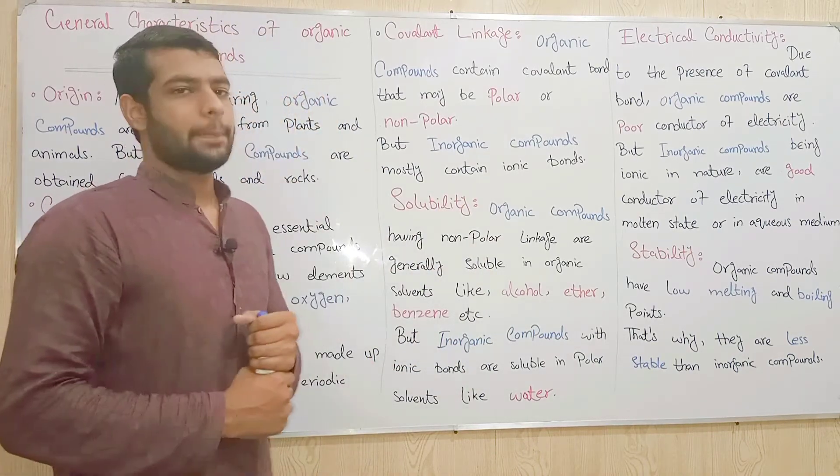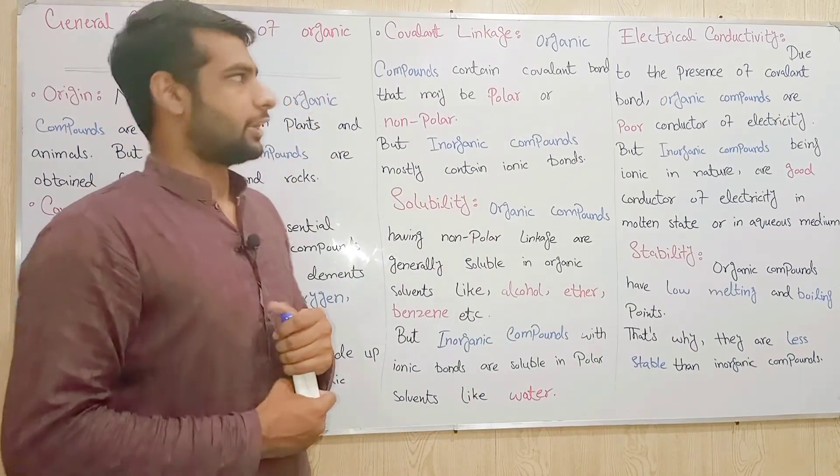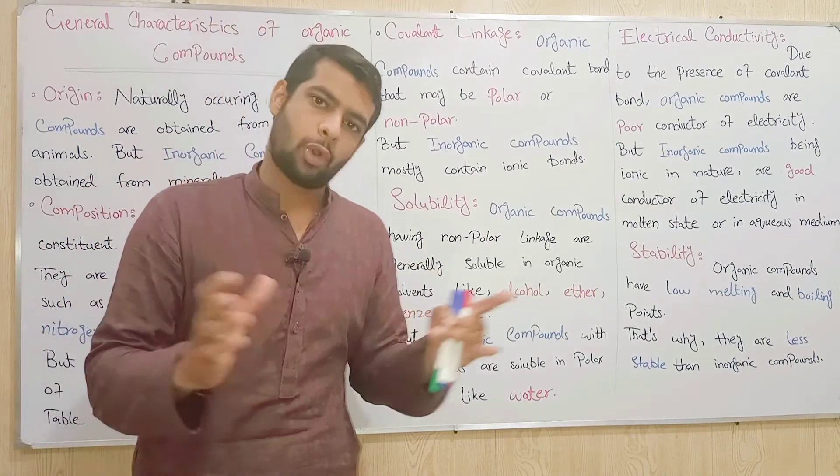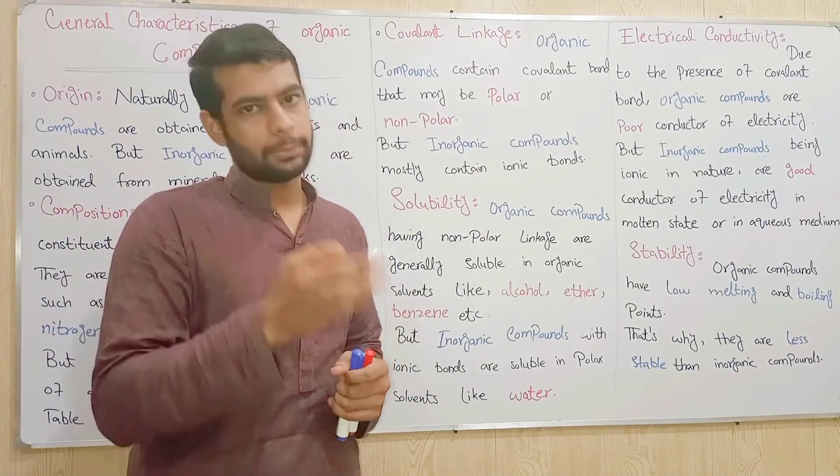تیسرا point جو ہے covalent linkage — organic compounds میں covalent bond ہوتا ہے جو polar اور non-polar ہو سکتا ہے۔